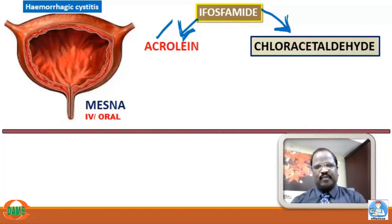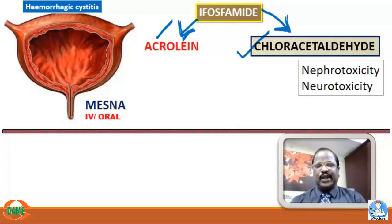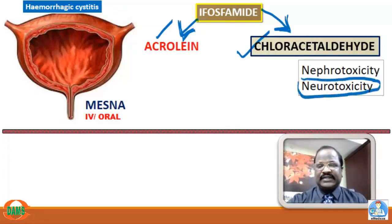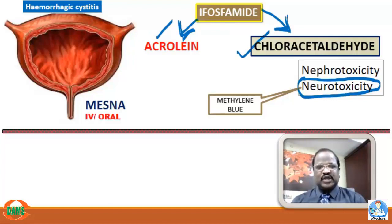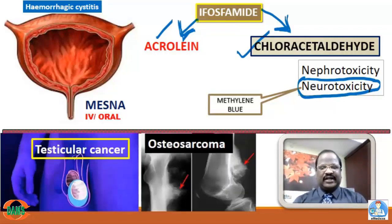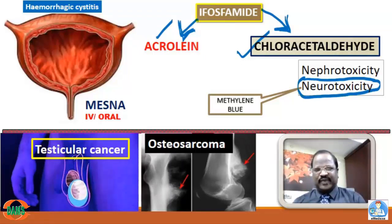Mesna is the antidote for both cyclophosphamide and ifosfamide. Ifosfamide also produces chloroacetaldehyde, causing neurotoxicity and nephrotoxicity. Neurotoxicity from chloroacetaldehyde can be minimized using methylene blue. Compared to cyclophosphamide, ifosfamide causes more hemorrhagic cystitis and more neurotoxicity due to longer metabolite accumulation. Ifosfamide is useful for treatment of testicular cancer and osteosarcoma.